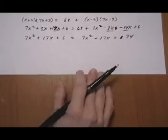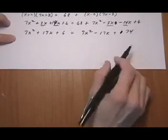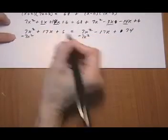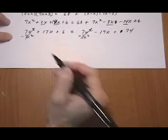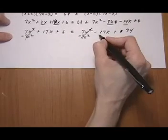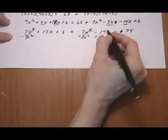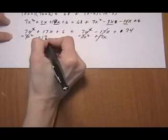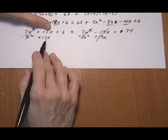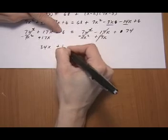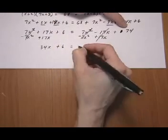Alright. Now we start moving terms around. So we want to get x's left, numbers right. So let's take away 7x squared on both sides. And, nicely enough, they cancel out. And now we want to add 17x over here, so that we get the x's away from the right side. And we add it to the like term on the left. Balancing out the equation, we get 34x. Just bring down the plus 6. Equals 74.